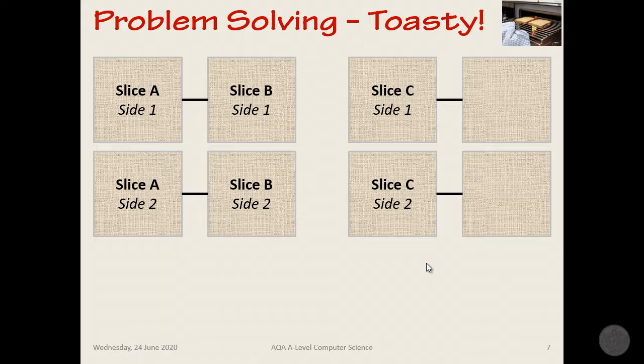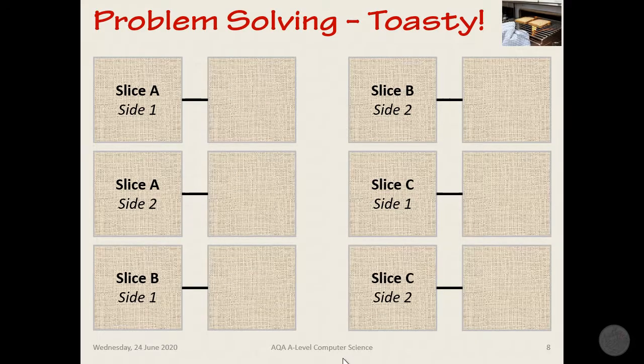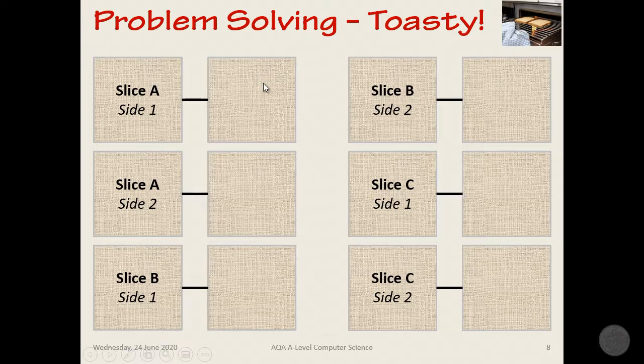Now another way of doing it, which would be a worse solution in terms of efficiency, is this one. Here we're not making use of our resources because the second place here on the grill is never used. We're simply taking each slice, grilling both sides, and then putting the next slice in and so on. We still end up with a similar outcome, although the slices will be at varying temperature by that point. But this has taken us a very long time to do, six moves in this case.